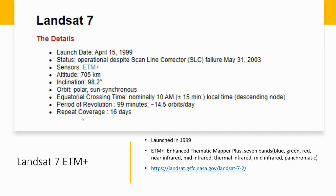Landsat 7 satellite was launched in 1999 with the Enhanced Thematic Mapper Plus, which has seven bands: blue, green, red, near-infrared, mid-infrared, thermal infrared, mid-infrared, and panchromatic. Please pay attention that the seventh band is a panchromatic band.